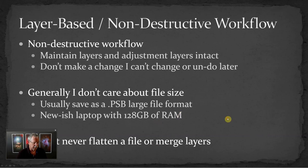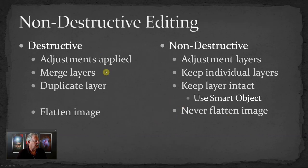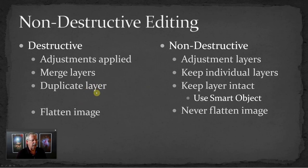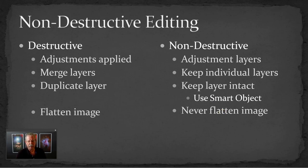Some of the fundamentals that we'll look at: destructive editing would be adjustments applied directly to a layer. Non-destructive would be using adjustment layers. Destructive is merging layers, as opposed to keeping individual layers. I see a lot of people duplicate a layer and then work on that duplicate layer — that's really just another form of destructive editing. Keep the layers intact. If you need to do certain operations such as applying filters, you can convert a layer to a smart object, which retains all of the original data intact. And never flatten an image, especially not a master file. Always keep your master files fully intact with all of the layers.